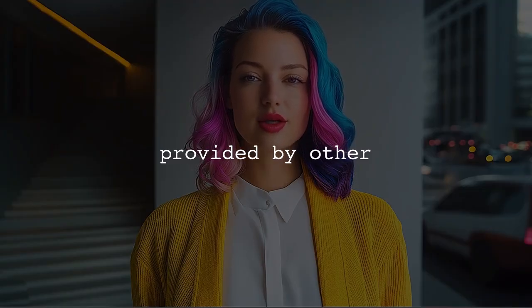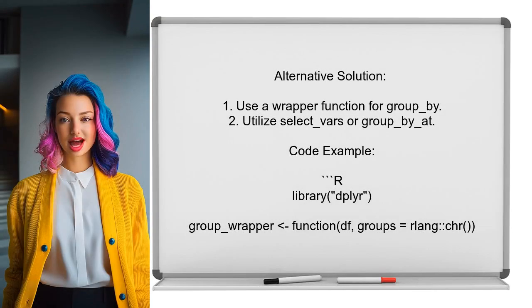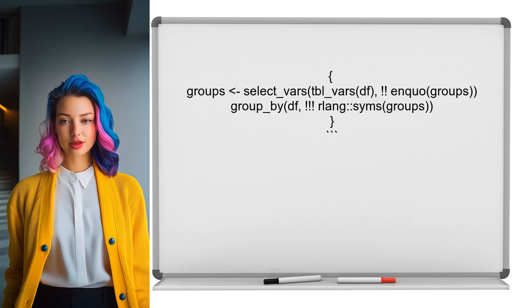Now let's look at the answers provided by other users. This user suggests that to group by multiple columns in dplyr, you should not use ccool1, cool2 directly in groupby. Instead, they recommend creating a wrapper function that utilizes select vars or the groupby at function. This allows you to select columns for grouping while maintaining the correct semantics.